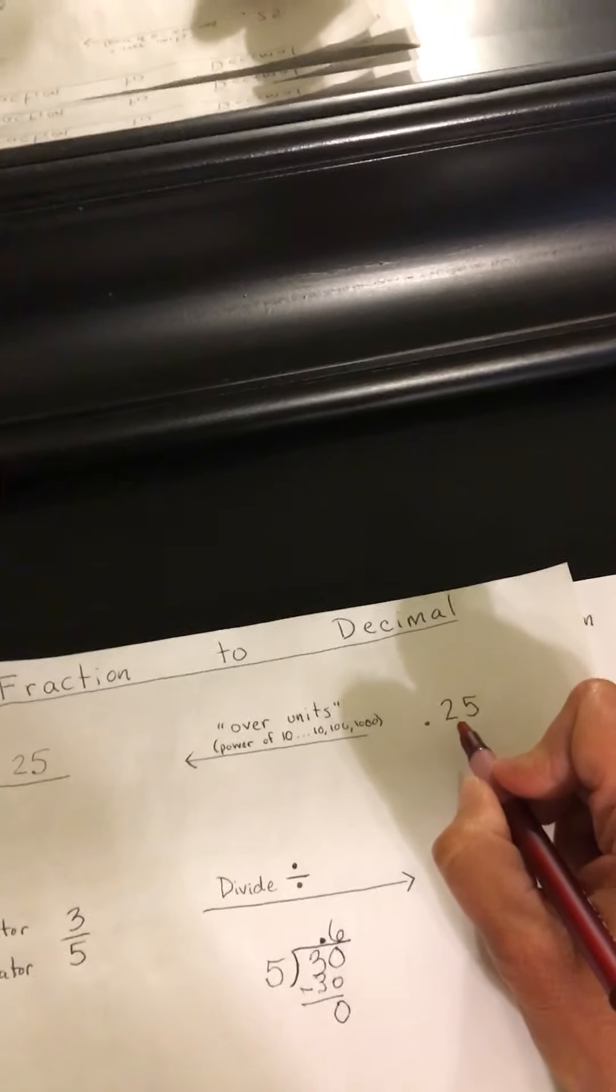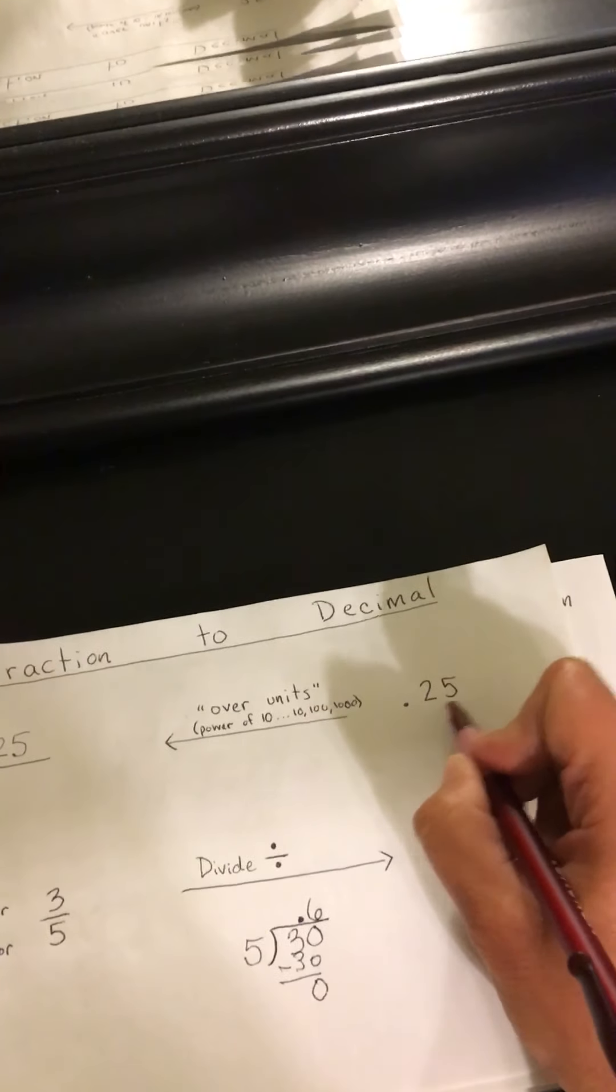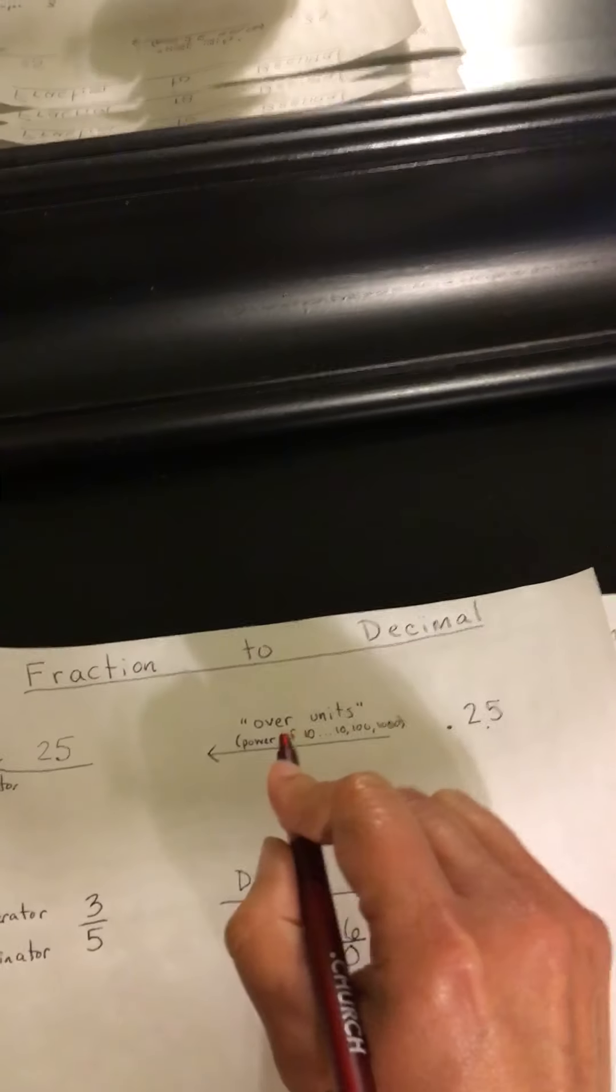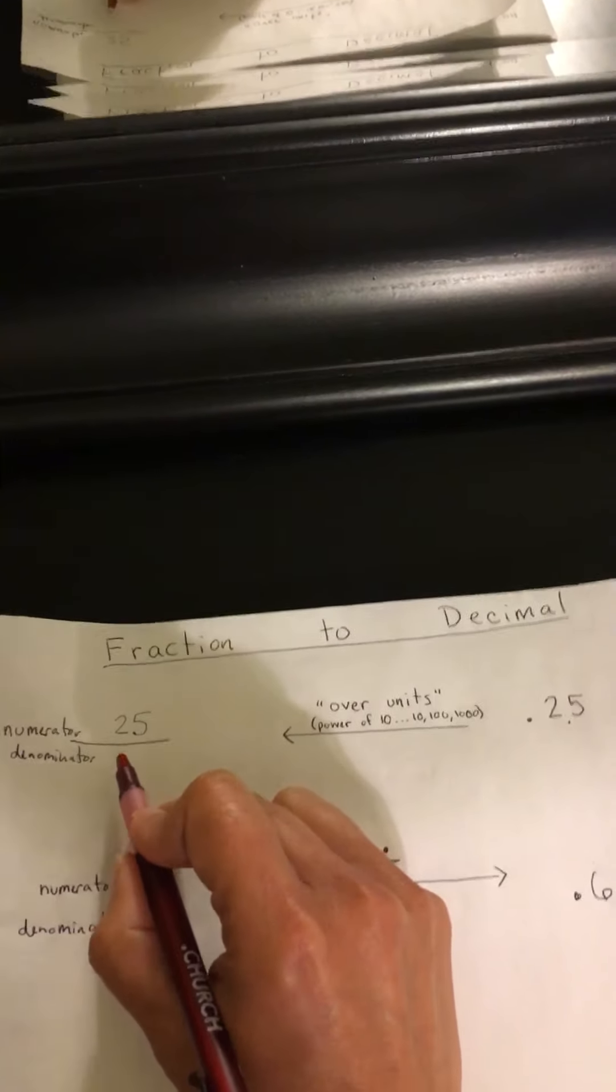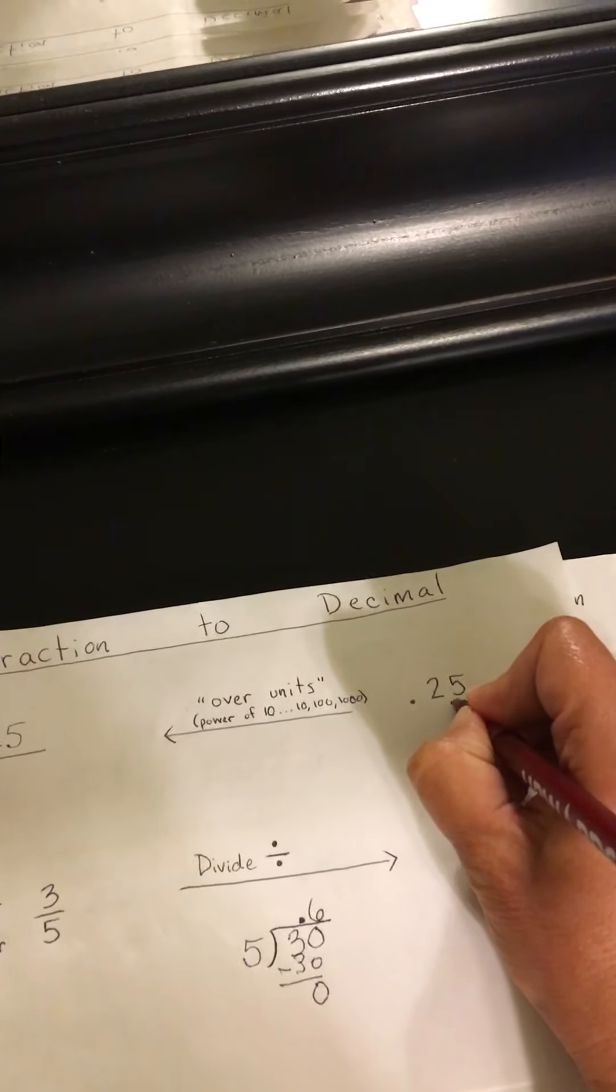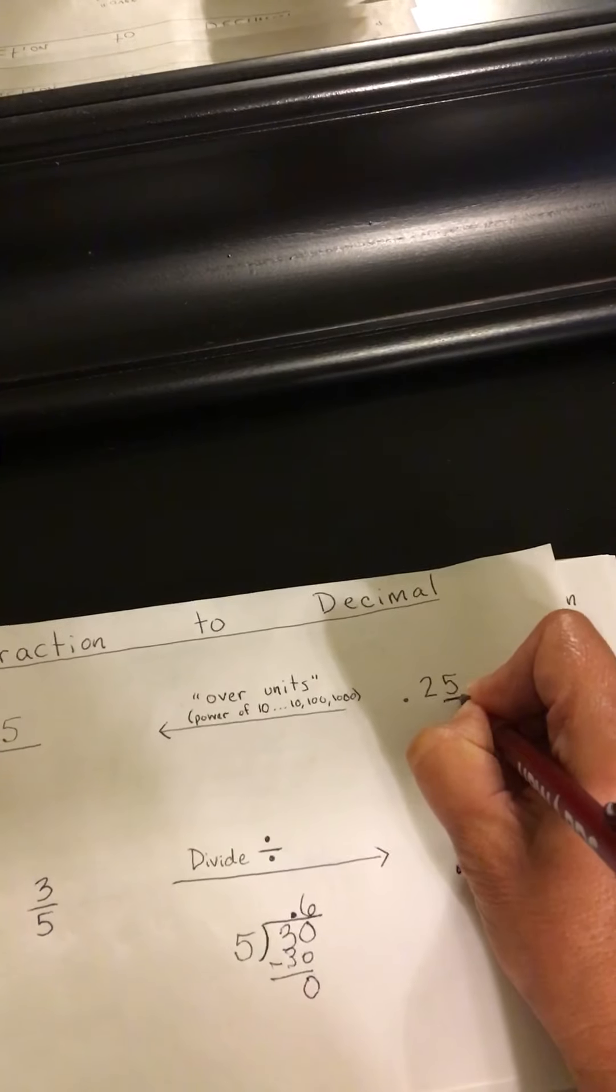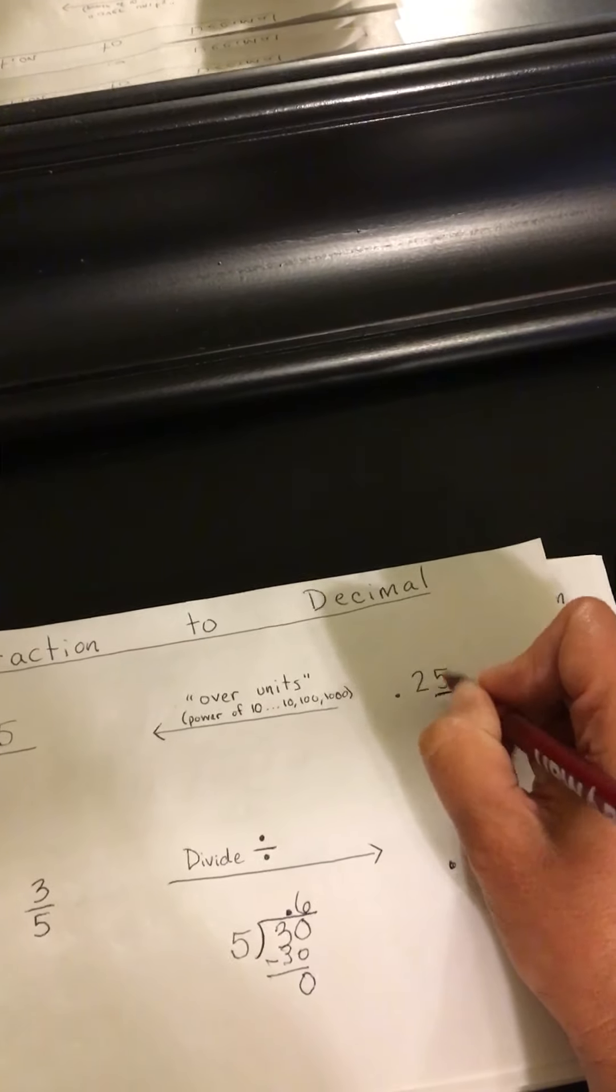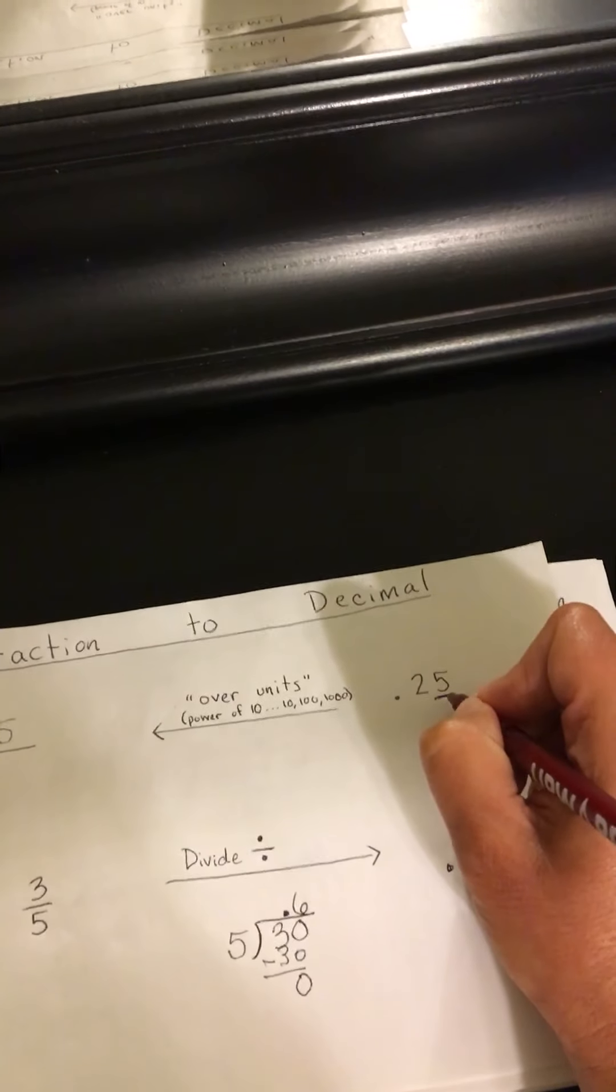Over units means you have to know your units here. And you're going to use those units to tell you what goes down here on the bottom of your fraction. So look at the final digit in your decimal number.